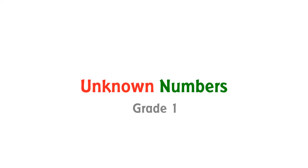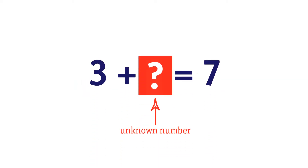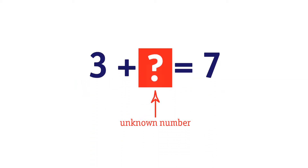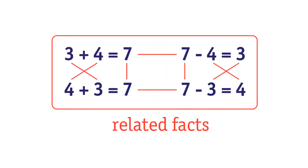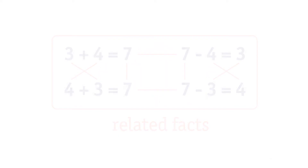Unknown Numbers, Grade 1. We can use a related fact to find an unknown number. Related facts use the same numbers in a different order. Let's take a look at an example.